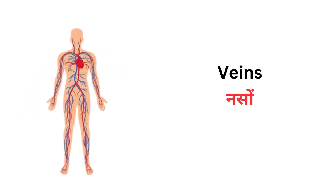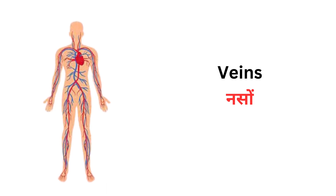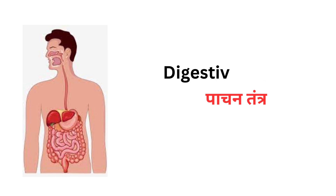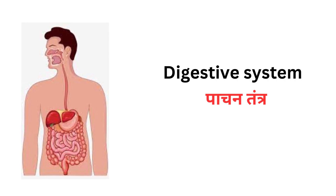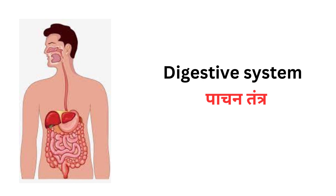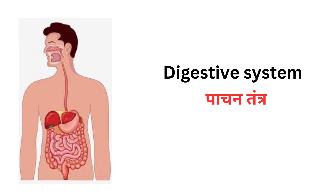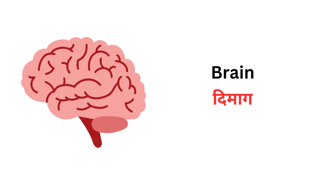Veins को नसें कहते हैं। Digestive System को पाचन तंत्र कहते हैं। Brain को दिमाग कहते हैं।